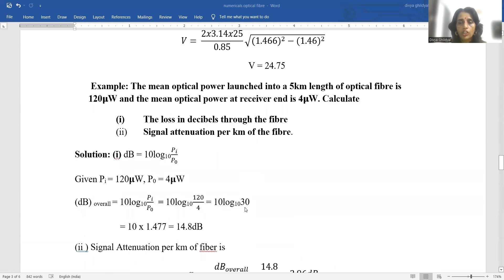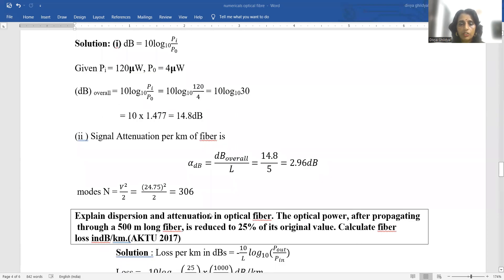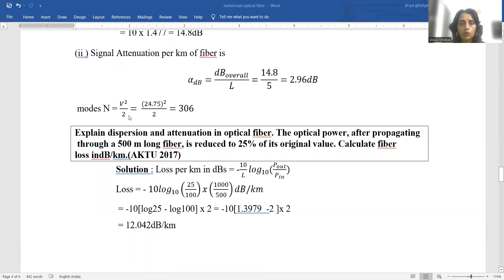The mean optical power launched into a 5 kilometer length of optical fiber is 120 micrometer and the mean optical power at receiver end is 4 micrometer. Calculate the loss in decibel through the fiber and signal attenuation per kilometer of the fiber. Decibel loss equals 10 log base 10 pi upon p0, where pi is the input power equal to 120 microwatt, p0 is output power equal to 4 microwatt. We put the values of pi and p0 and we get the answer. Signal attenuation per kilometer of fiber equals decibel loss upon total length, that is 14.8 divided by 5. Number of modes equals v square upon 2.